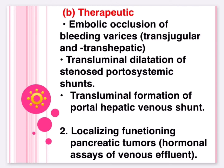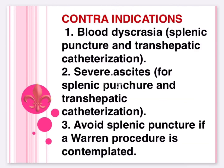Contraindications: one, blood dyscrasia for splenic puncture and trans-hepatic catheterization; two, severe diathesis for splenic, pulmonary, and trans-hepatic catheterization; three, avoid splenic puncture if a Warren procedure is contemplated.